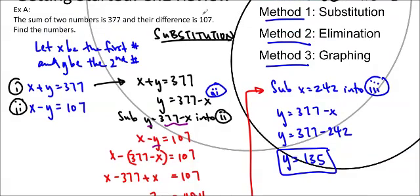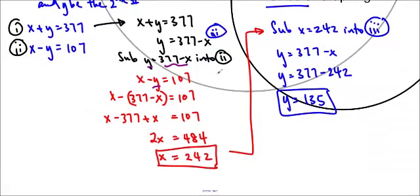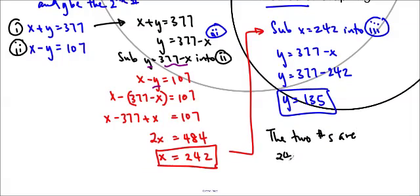Because this is a word problem, we write a word solution. I put a box around my answers to keep it clean so you can tell what happened — it's like a little victory dance. The two numbers are 242 and 135.